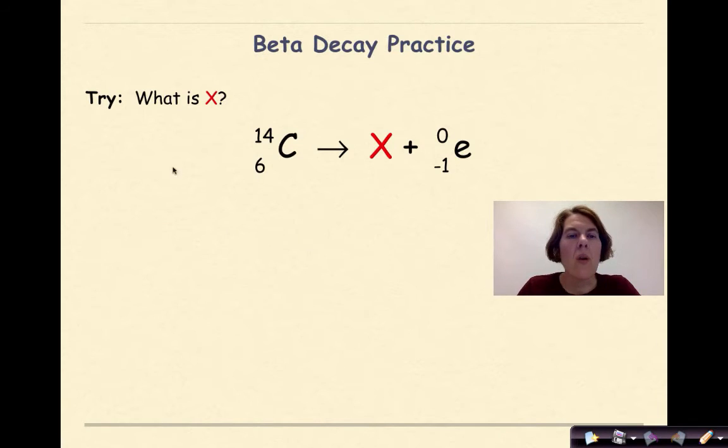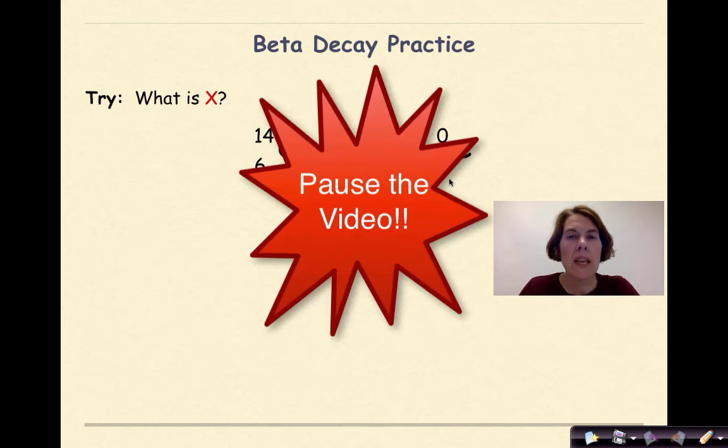Now it's your turn. What is X? I have carbon 14 undergoing beta decay. There's my beta particle right there. Take a moment, figure it out, check your work.